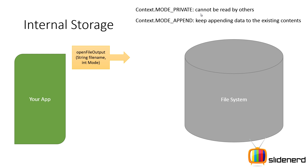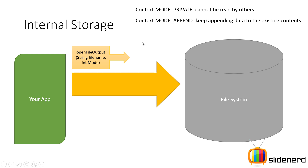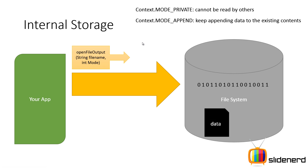To illustrate: if the file already contained 'dog' and you write 'cat' in MODE_PRIVATE, 'dog' is erased and replaced by 'cat'. But with MODE_APPEND, the file will contain 'dog' followed by 'cat'. openFileOutput gives you a reference to a FileOutputStream, which means you can write binary data from your app to the file system, and that data is stored in the file — for example, data.txt.